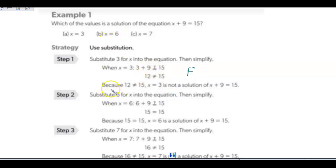We can substitute 6 for x. And we have 6 plus 9. 6 plus 9 is 15. 15 is equal to 15, so this is a true statement. And therefore, x equals 6 is a solution to x plus 9 equals 15.